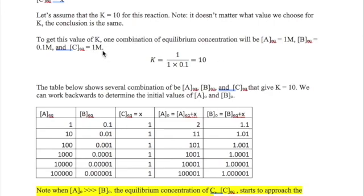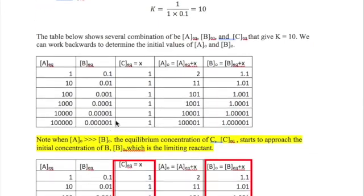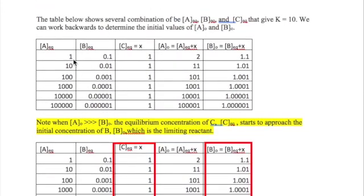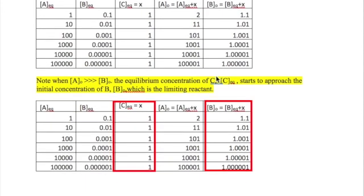So one way we can get a K that's equal to 10 is if we have C being equal to 1 molar, A being equal to 1 molar, and B being equal to 0.1 molar. Now let's consider other combinations of concentration of A, B, and C at equilibrium that will yield a value of 10 for K. These are all listed in this table right here in the first three columns. What I can do is then work backwards to figure out what the initial concentration of the reactants will be if I have this equilibrium concentration. Values of the initial concentration of these reactants are then shown here on the last two columns on the right.